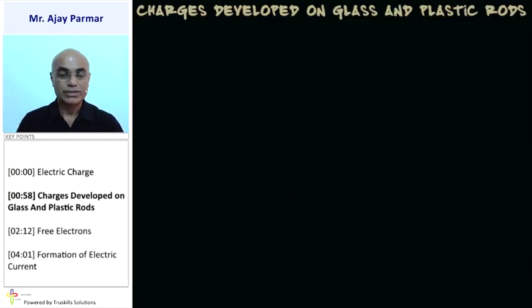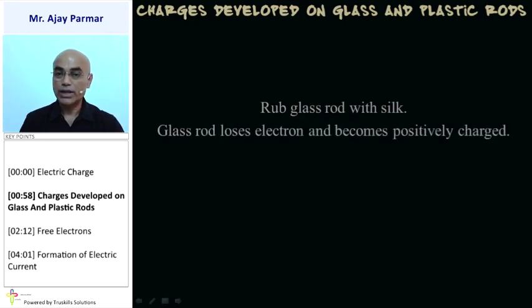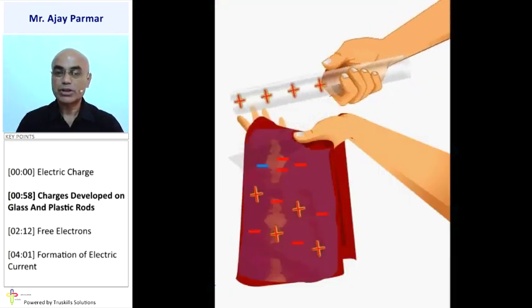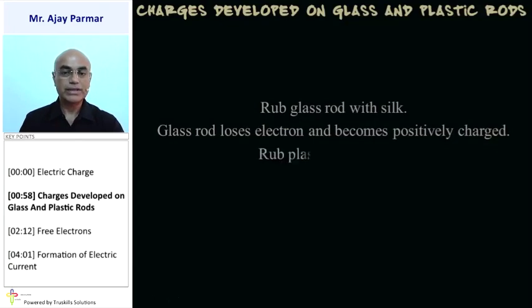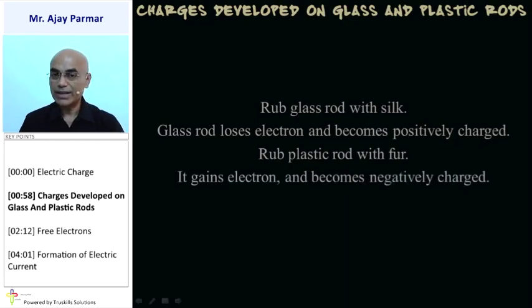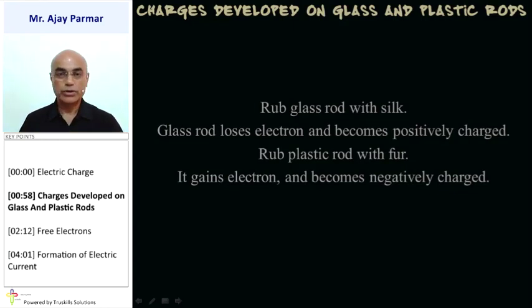Charges are developed when we rub plastic or glass rods with other objects. For example, if we rub a glass rod with silk, the glass rod loses electrons and becomes positively charged. When a plastic or ebonite rod is rubbed with fur, it gains electrons from the fur and becomes negatively charged, while the fur becomes positively charged.